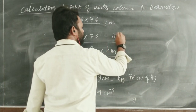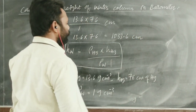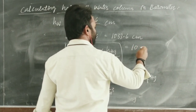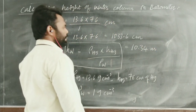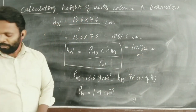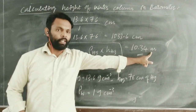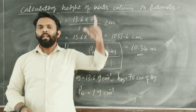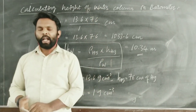That is approximately 10.34 metres when converting from CGS to the SI system. This means the water column in the barometer would be about 10 metres high, which is very difficult to install. That is why mercury is used in a barometer — because of its high density of 13.6 g/cm³.